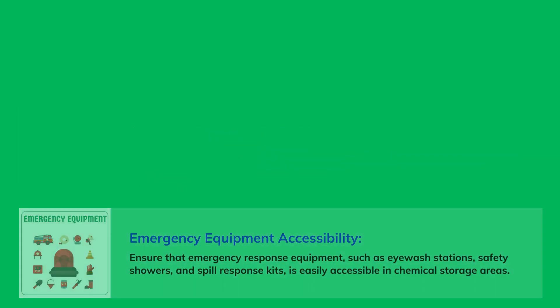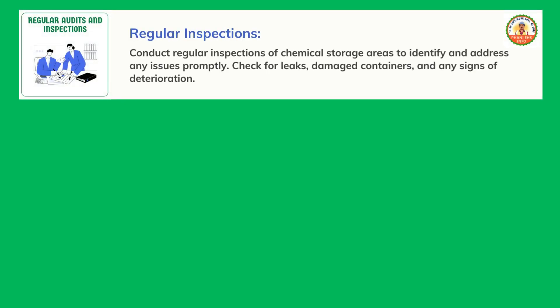Regular Inspections: Conduct regular inspections of chemical storage areas to identify and address any issues promptly. Check for leaks, damaged containers, and any signs of deterioration.